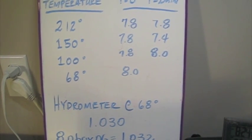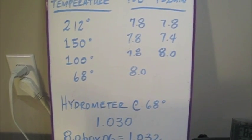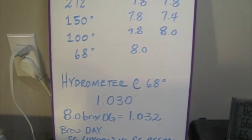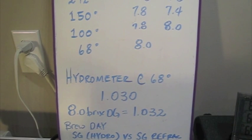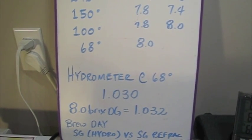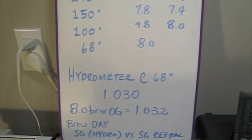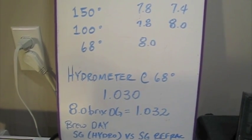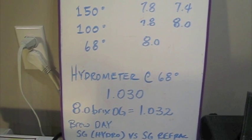One number, 7.4, a bit of an outlier. But we'll ignore that one for now. The hydrometer gave us a reading of 1.030. And doing the brix to gravity conversion, the refractometer was giving a consistency of 1.032.